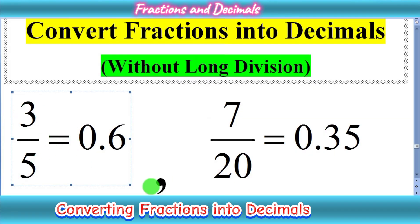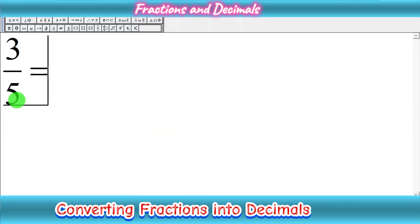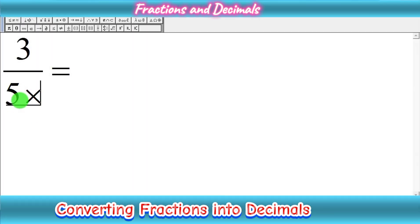Let's start. Our first question is 3 upon 5. We can convert decimal fractions easily when we have the denominator as a power of 10, but here we have denominator as 5, which is not a power of 10. So now you have to check which number we should multiply with 5 to get the nearest power of 10. The nearest power of 10 to 5 is 10.